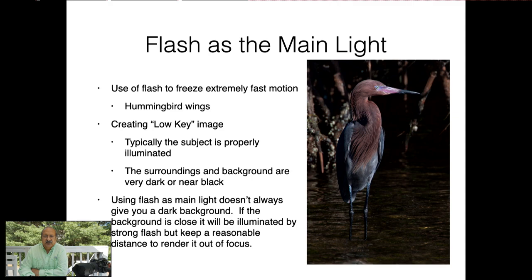If you're going to use flash as a main light, use it to freeze extremely fast motion — things like hummingbirds — you can set up a series of flashes to capture their wings. For low-key images, use your flash primarily to light your subject while keeping ambient light lower to darken the background — but don't make the background completely black, as that would depict a nocturnal bird. Show surroundings that are dark or near black, but not completely black. If the background is close you'll have less of a problem, though it may become a distraction.